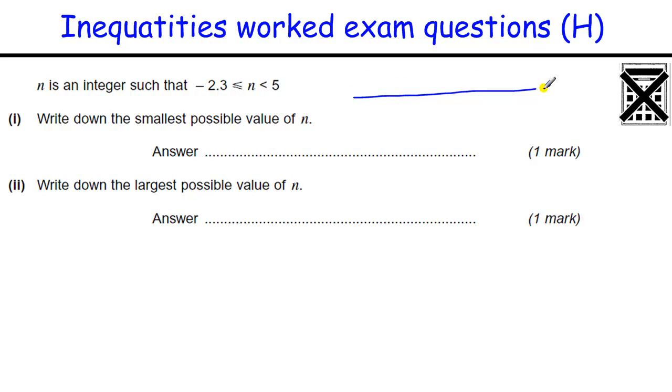If I think about this on a number line, 0 here, 1, 2, 3, 4, and 5, minus 1, minus 2, minus 3. So minus 2.3, which is going to be about here, so that's one value, and it's going to be less than 5, so our value is going to be between these two things.